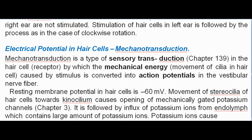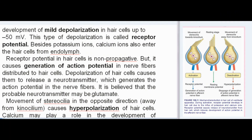Electrical potential in hair cells — mechanotransduction: mechanotransduction is a type of sensory transduction in which mechanical energy (movement of cilia in the hair cell) caused by a stimulus is converted into action potentials in the vestibular nerve fiber. The resting membrane potential in hair cells is -60 mV. Movement of stereocilia towards the kinocilium causes opening of mechanically gated potassium channels, followed by influx of potassium ions from endolymph, which contains a large amount of potassium ions. Potassium ions cause mild depolarization up to -50 mV, called the receptor potential.